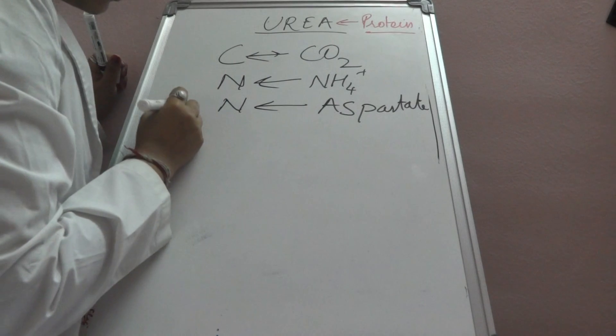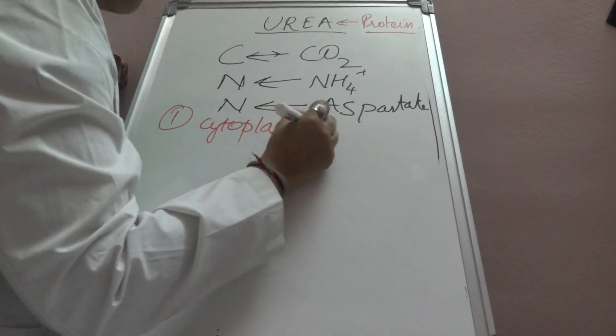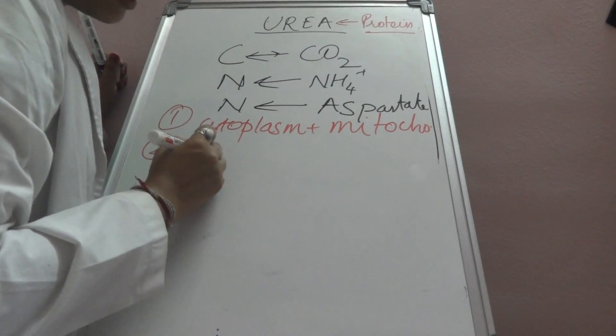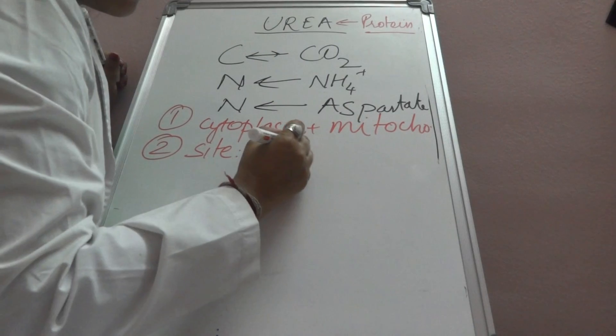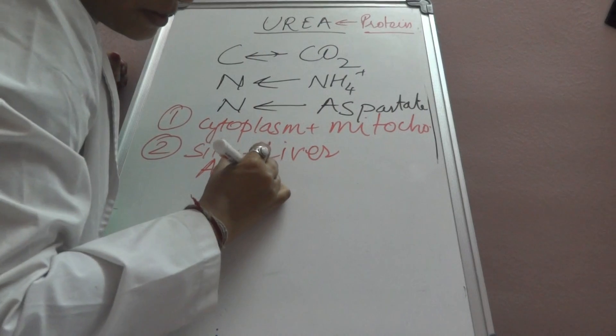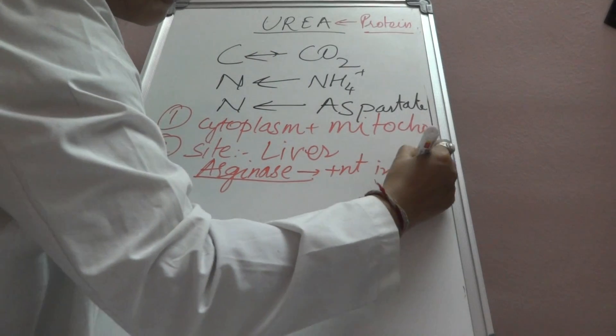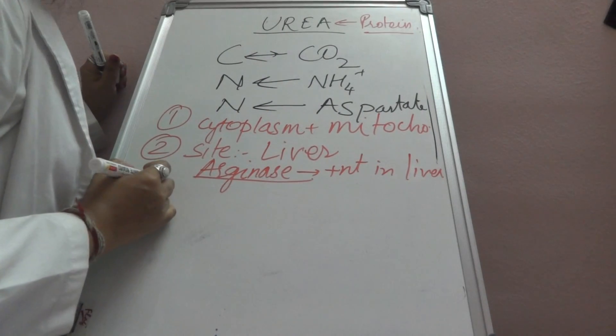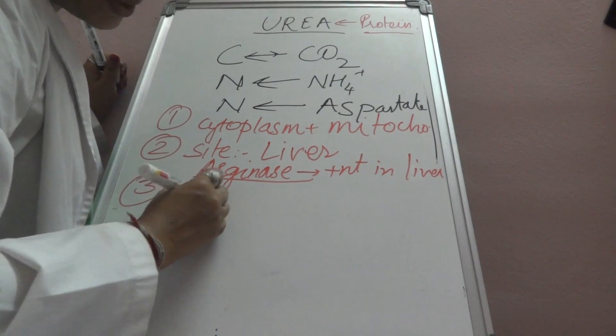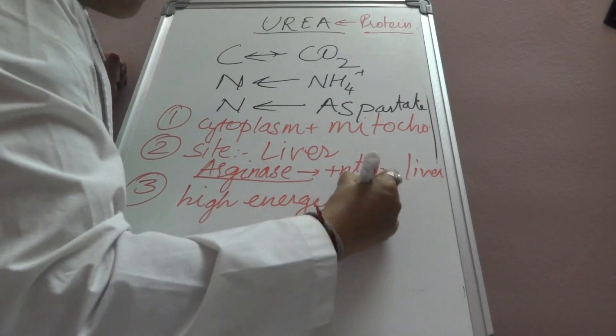Salient features of urea synthesis: First, it takes place in cytoplasm plus mitochondria. Second, the site is liver because the last enzyme, arginase, is present only in liver. Third, it is a highly energy-using process—four ATPs are utilized.